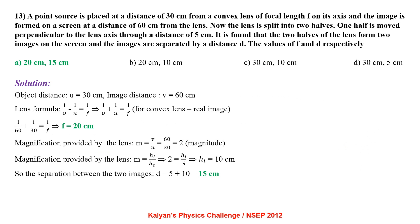A point source is placed at 30 cm from a convex lens on its axis and the image is formed on a screen at 60 cm from the lens. The lens is split into two halves; one half is moved perpendicular to the lens axis by 5 cm. Applying the lens formula with object distance 30 cm and image distance 60 cm, focal length = 20 cm. Magnification M = 2. Height of image = 2×5 = 10 cm. Separation between two images D = 5 + 10 = 15 cm.